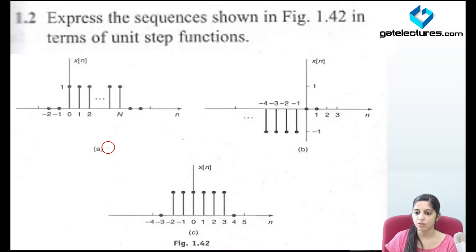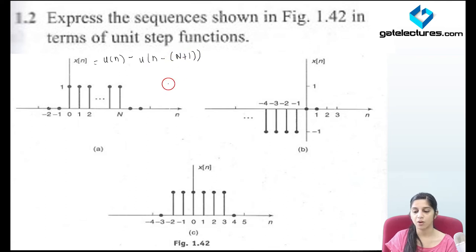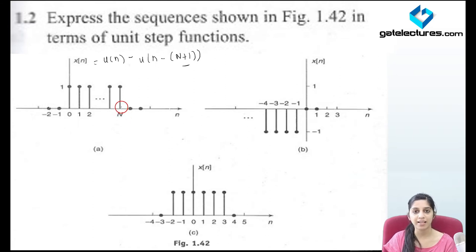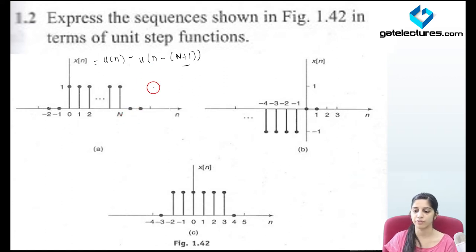Now look at this question. The signal starts from n equals 0, so I write u(n). I have to subtract samples which occur after n equals capital N. So I write u(n) minus u(n minus [N plus 1]). Now you get the logic why I added plus 1 — if I had just taken n minus capital N, the sample at capital N would have been lost. So this is u(n) minus u(n minus [N plus 1]), removing samples which occur after n equals capital N.